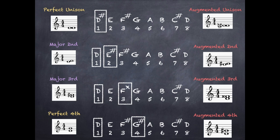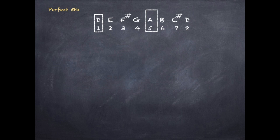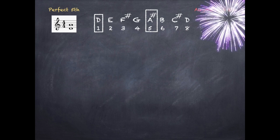To create an augmented fifth, first work out a perfect fifth interval. We go from the first note of the D major scale to the fifth note and stack them on the stave. To make an augmented fifth, sharpen the A — which was the top note of the perfect fifth — and place them on the stave.